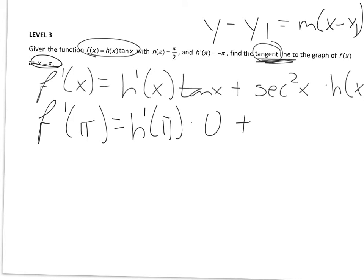Another way you could think about that, tangent is y over x. Pi is 180 degrees. At 180 degrees, the y coordinate is 0, and the x coordinate is negative 1.